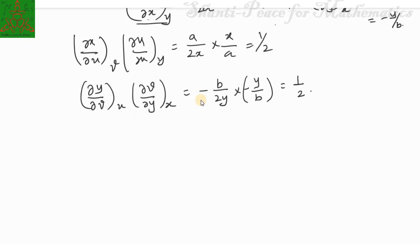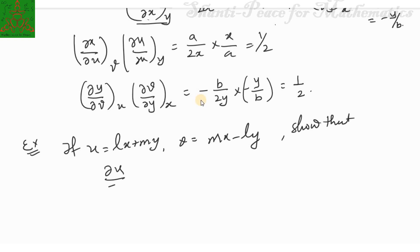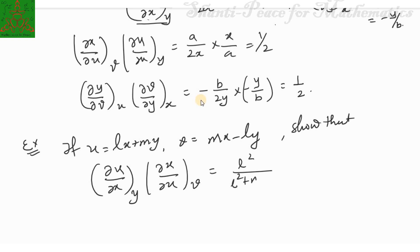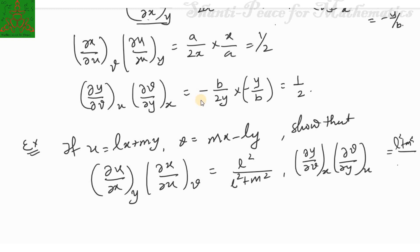I am giving you one more example as homework. Try to show that if u = lx + my and v = mx − ly, then (∂u/∂x)_y · (∂x/∂u)_v = l²/(l² + m²) and (∂y/∂v)_x · (∂v/∂y)_u = (l² + m²)/l². That's it for this video. If you liked it, please press the like button. For comments, suggestions, or questions, drop them in the comment box below. See you in the next video — bye bye, sayonara.